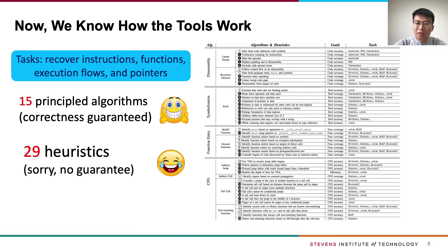After reading their source code and summarizing their strategies used to disassemble, we know how the tools work. Specifically, we focus on the following four tasks: recovering instructions, functions, control flow graphs, and pointers. And we summarize their strategies into two categories: algorithms and heuristics.